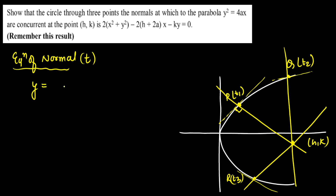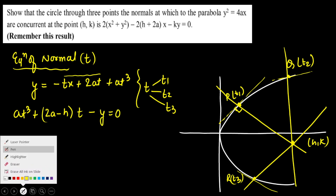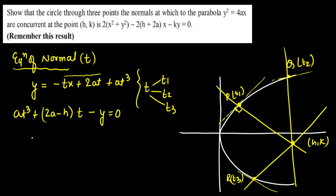We start with the equation of the normal drawn at a general point t on the parabola. In terms of t, the equation of the normal is y = −tx + 2at + at³. Since all normals pass through the single point (h, k), we rewrite this as: at³ + (2a − h)t − k = 0. This is a cubic in t, clearly giving three values t1, t2, t3. The first result from this cubic is t1 + t2 + t3 = 0.